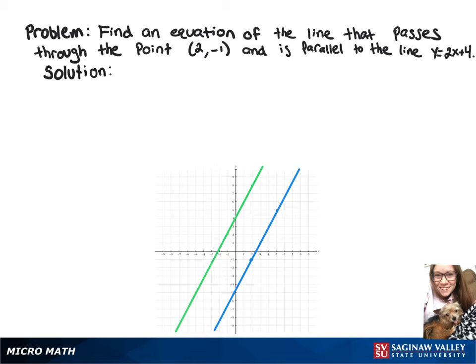To find an equation of the line that passes through (2,-1) and is parallel to y equals 2x plus 4, we can look at point-slope form.